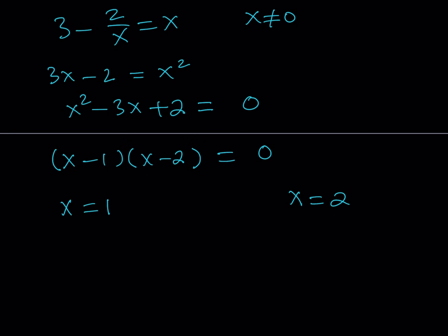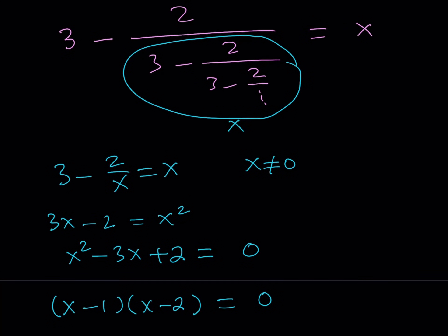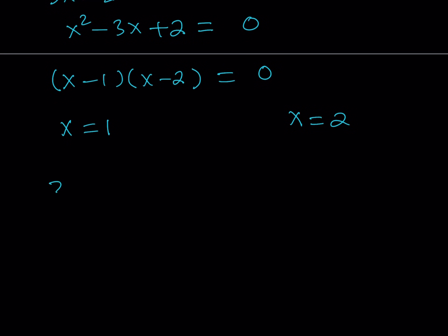Well, one of them is x equals 1 and the other one is x equals 2. But our expression is that one. So let's go ahead and rewrite that. We have 3 minus 2 over 3 minus 2 over 3 minus 2 over dot dot dot. But now we said that x is either 1 or 2. But the whole thing is called x. So how is that possible? How can one thing be two different values at the same time?